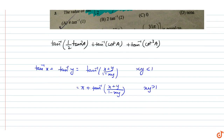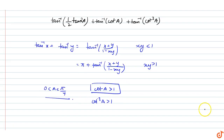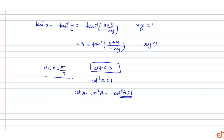We are given that a is in the range 0 to pi by 4. In this range, the value of cot a is greater than 1, so cot cube a will also be greater than 1, and the product cot a into cot cube a, that is cot to the power 4a, will also be greater than 1.